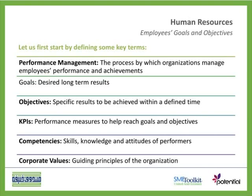When you talk about goals, these are our desired long-term results — goals are always long term. Objectives, on the other hand, are shorter term; we have a defined time frame to achieve certain objectives and results. KPI — key performance indicator — these are the performance measures to help reach goals and objectives. It's very important to have good measures in place. Then there are competencies, which are the core of human resources. Without a competency framework and database, we will not be able to sustain and grow our talent management within an organization.